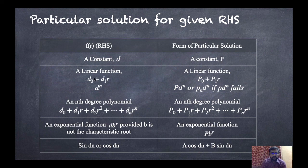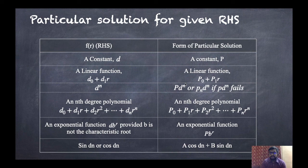Second type: whenever we have a linear function, that means some D0 plus D1·R, then we take P0 plus P1·R. Third type: whenever D raised to N is there, we choose the particular solution as P·D^N, or if this fails, then P·N·D^N.